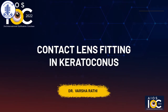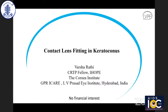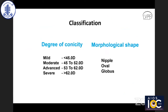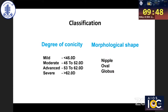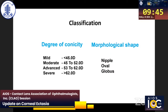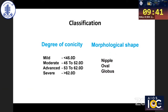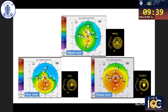Good evening everyone. This presentation is about contact lens fitting in keratoconus. We have all heard about classification and management of keratoconus, but contact lens should be the first choice for giving optical correction to such patients. For contact lens fitting, we need to know the degree of conicity, but the shape of the cone in keratoconus is very important for fitting a contact lens.